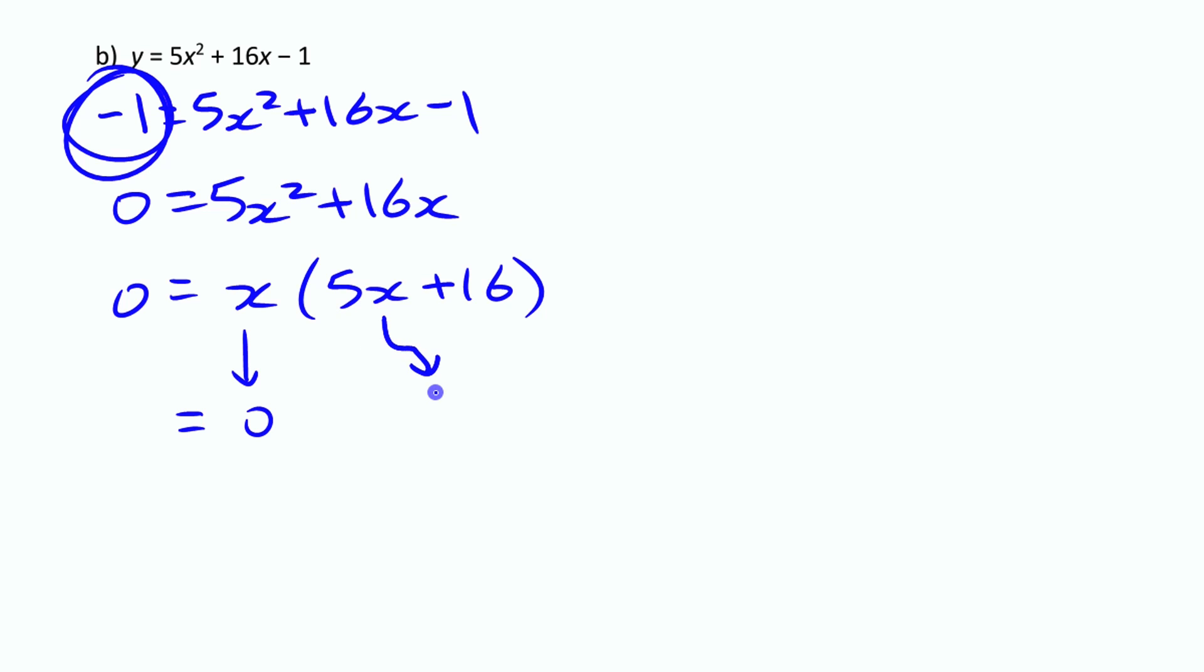So maybe we want to do a little bit of solving here. 5x plus 16 equals 0. So 5x equals negative 16. So x is negative 16 over 5. Or if you divide that, negative 3.2. So you have two points here. 0 and negative 3.2.